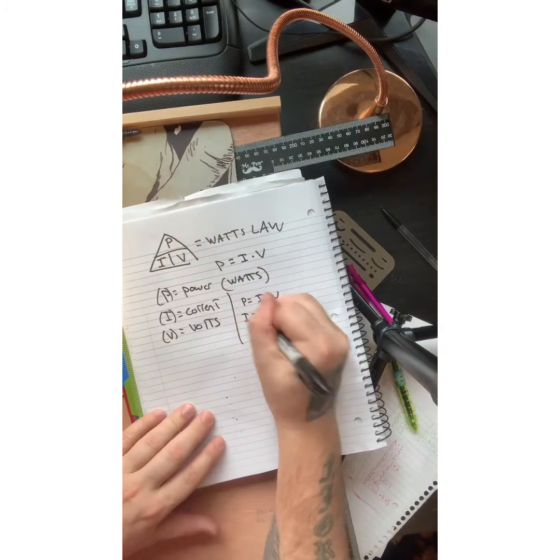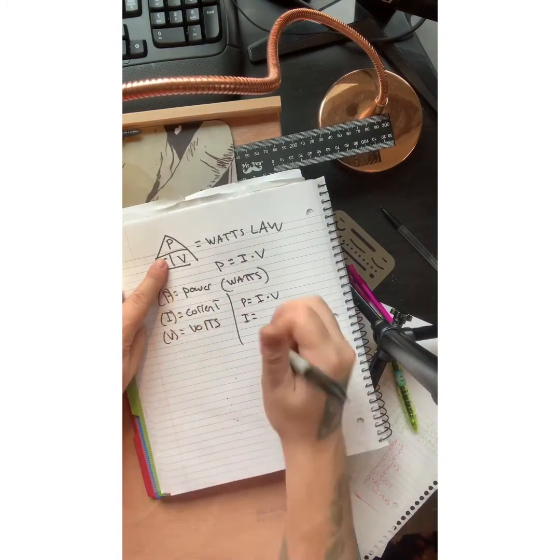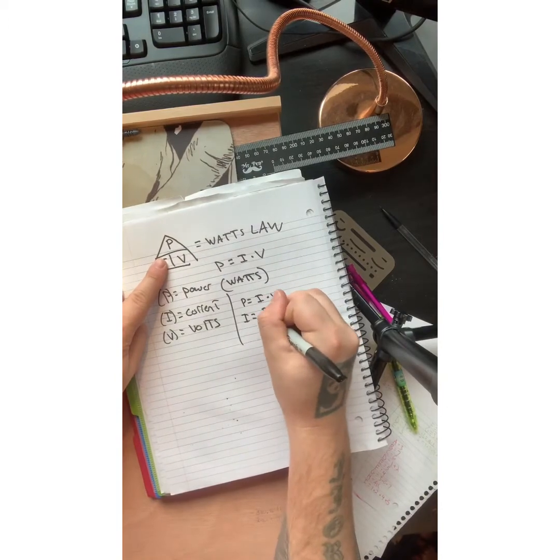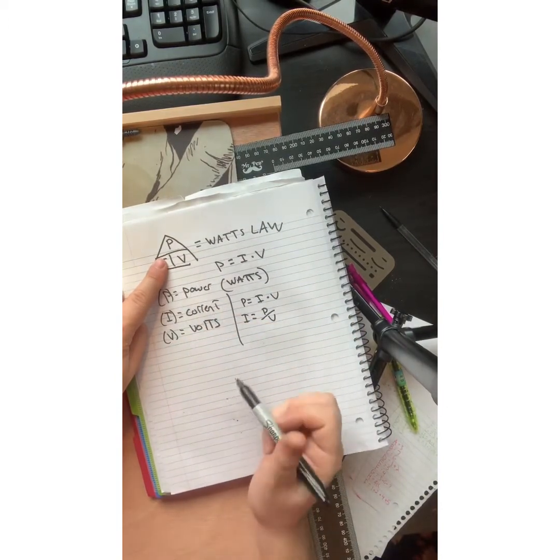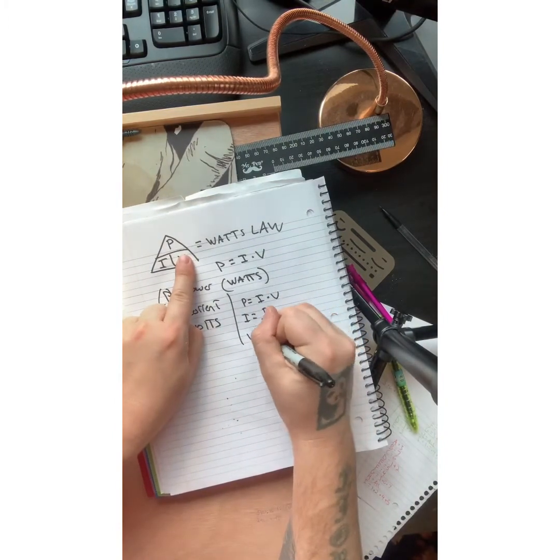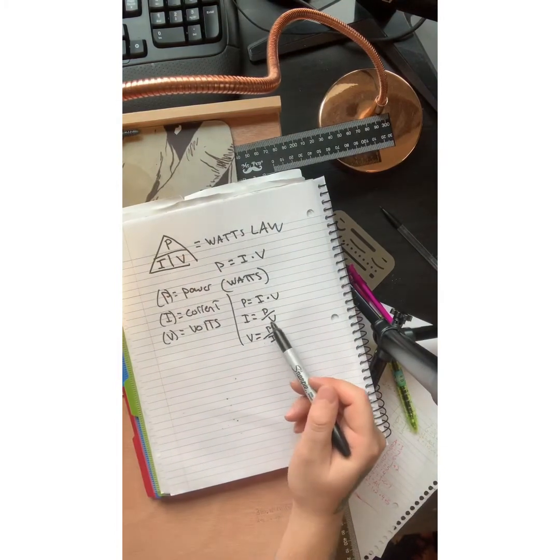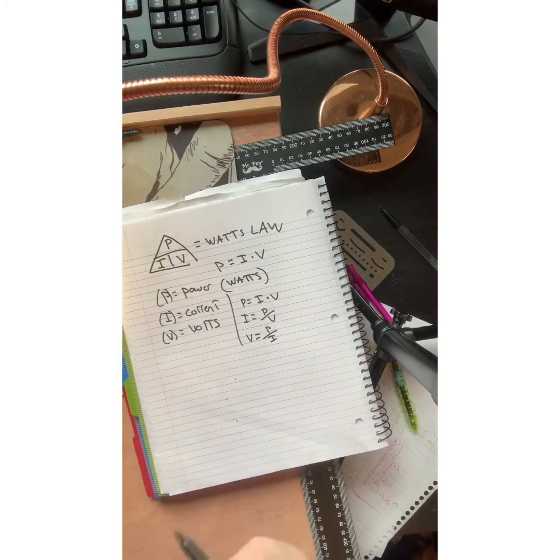If you're looking for current here, you can do the same thing, and because one is above the other, you know that it's P divided by V equals your current. If you want to find V, then you know it's your power divided by your current. And sorry, to find current is power divided by voltage, and I'm not sure if I messed that up when I said it.